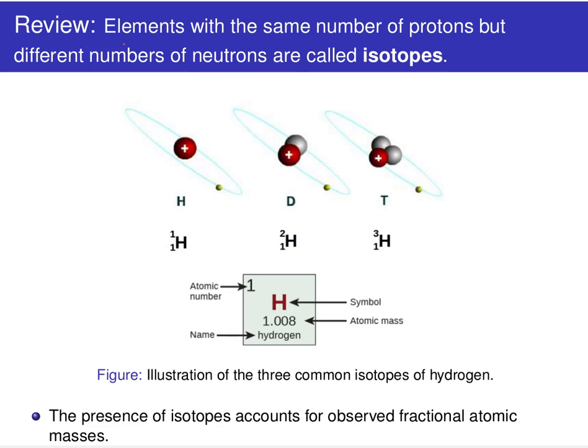Elements with the same number of protons — and remember, the number of protons defines that chemical or atomic identity — all elements of a given type have the same number of protons, but different isotopes have different numbers of neutrons.